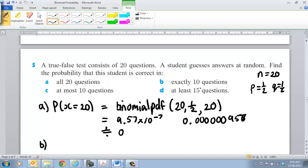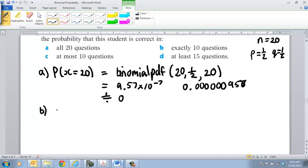Part B: getting exactly 10 questions right. Well, it's the same process as what we did here. So X equals 10, that's equal to the binomial PDF. The setting out that I'm showing you here is exactly what I'd be expecting to see you do in your test. So it's 20, half, and 10, getting exactly 10 correct.